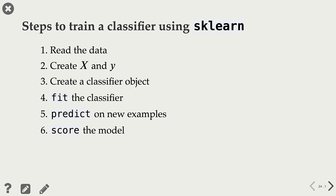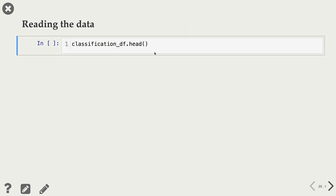The third step is creating a classifier object. In scikit-learn, all machine learning models are implemented in their own classes, and before training the model, you need to instantiate that class object. Once we have the classifier object, the next step is fitting the classifier, where most of the work is done for many classifiers. Then the fifth step is predicting on new examples. After fitting the model, you have the mapping function to predict on new examples. The sixth step is scoring the model — you want to know how well your model is performing, so this step is the evaluation step.